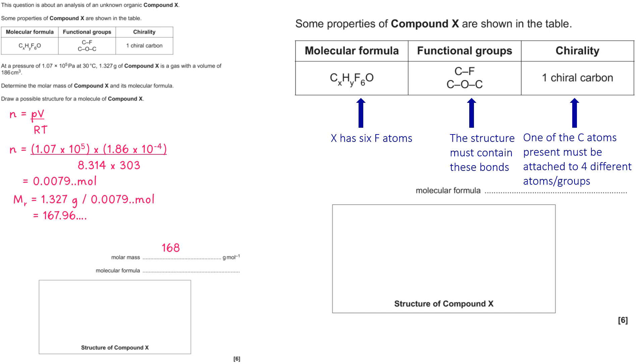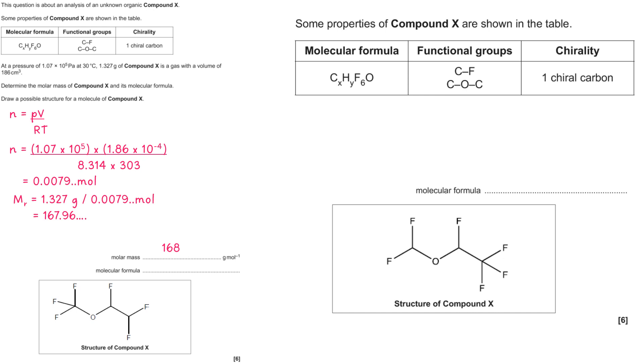Having a bit of a play around with those three criteria gives you this structure or this structure. Both of those would work, so either of them are acceptable as an answer. Therefore, your molecular formula is C₃H₂F₆O and I've just highlighted the chiral carbons.